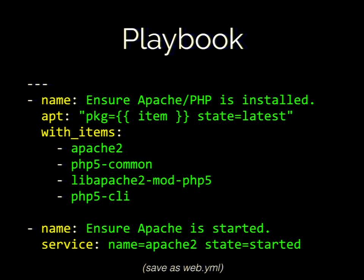Here's a more realistic playbook saved as web.yaml. We're making sure Apache and PHP are installed — using apt with a variable for package name, iterating through items apache2 and php5. We use state latest because we want the latest version. The second task makes sure Apache is started using the service module, which is platform-agnostic and works with whatever Linux distro you're using.